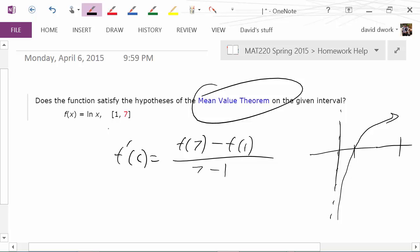And it has to be differentiable on the open interval of one to seven. So if we were to take the derivative of it, we could verify that it would just be one over x, and it is differentiable on one to seven, it's just not differentiable at zero. So we're fine.